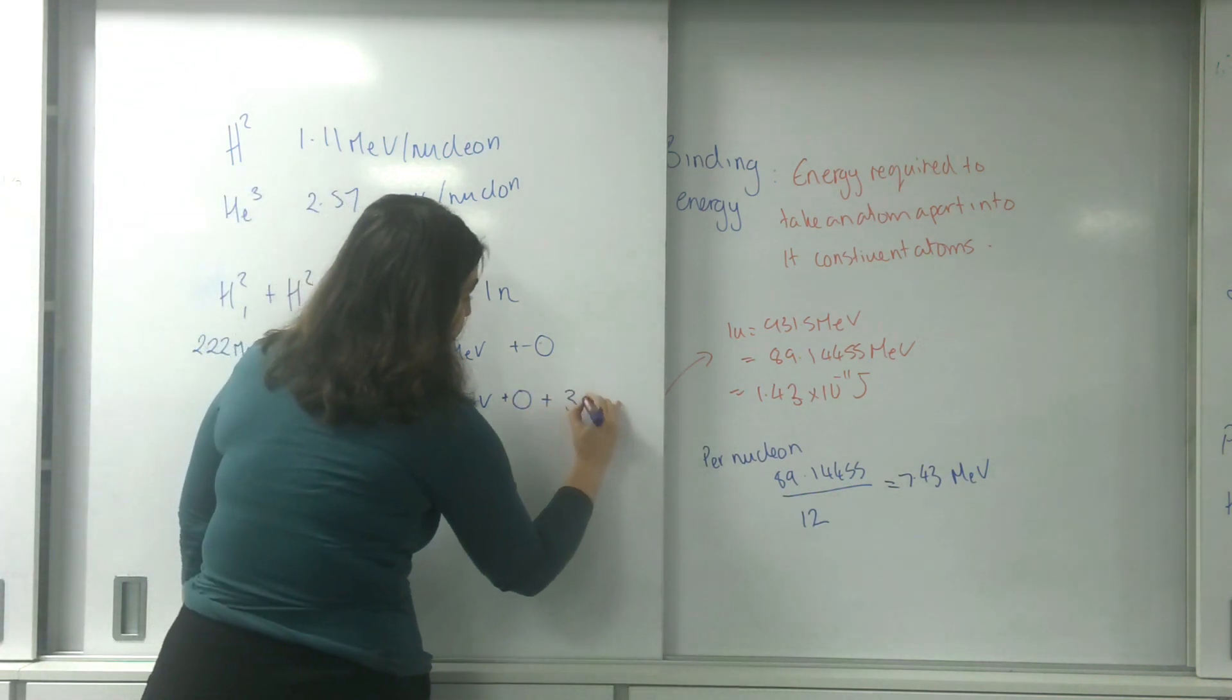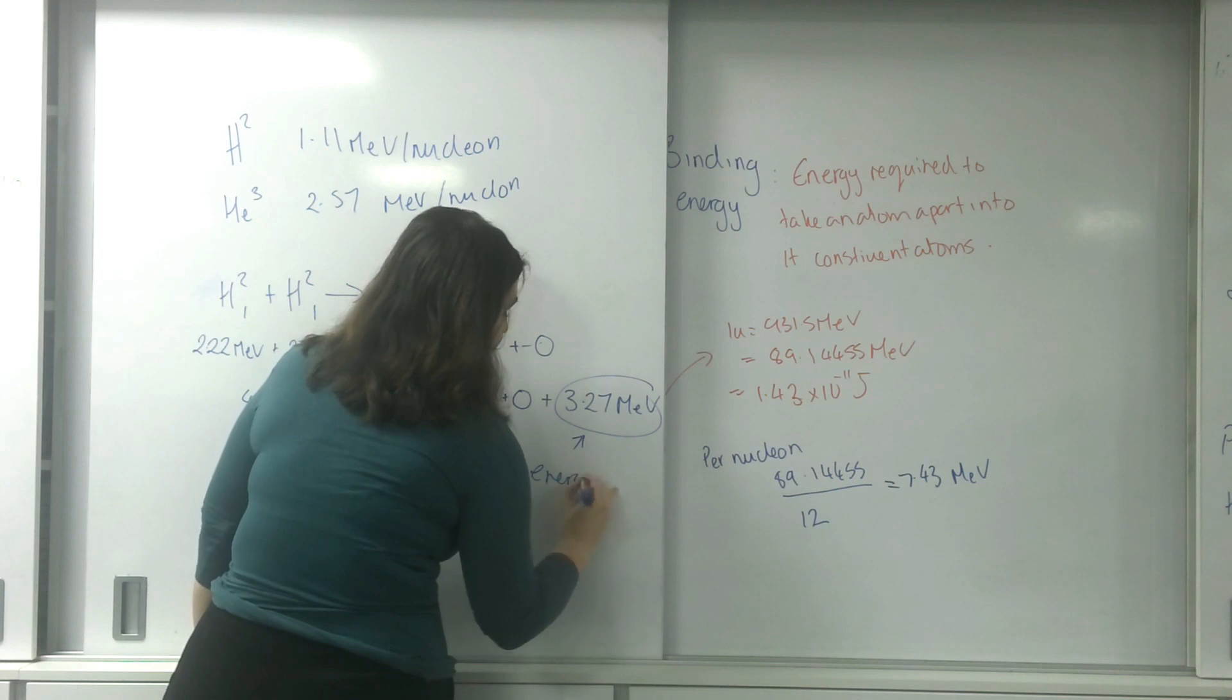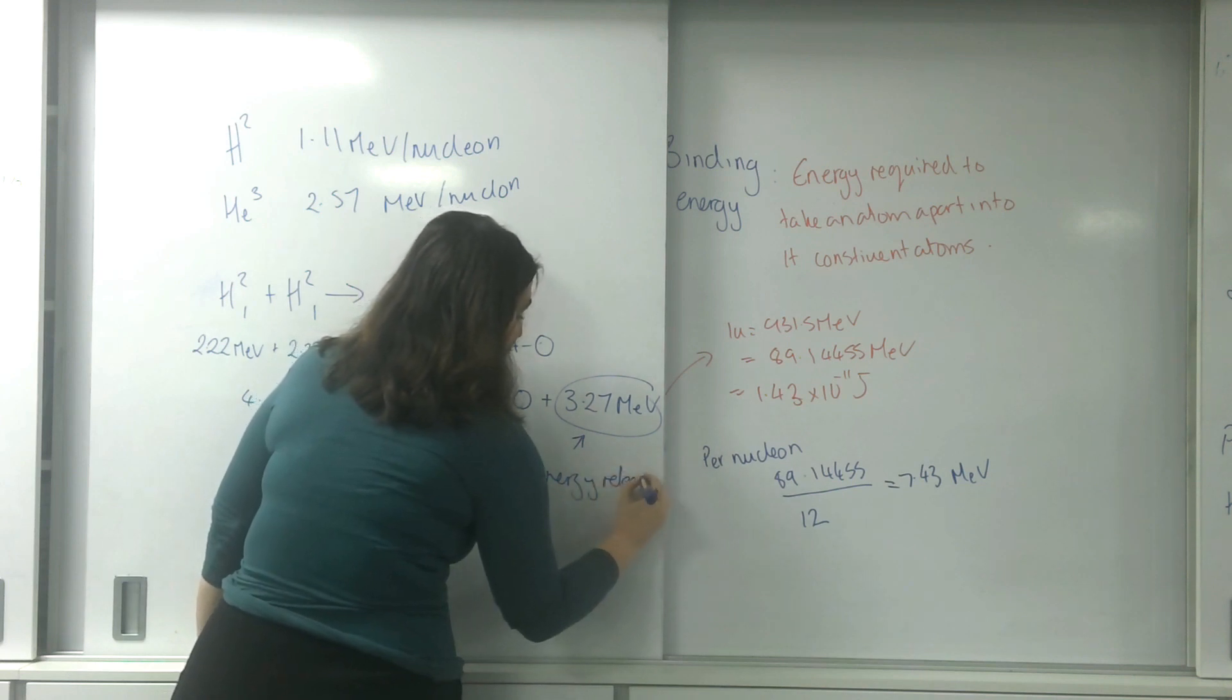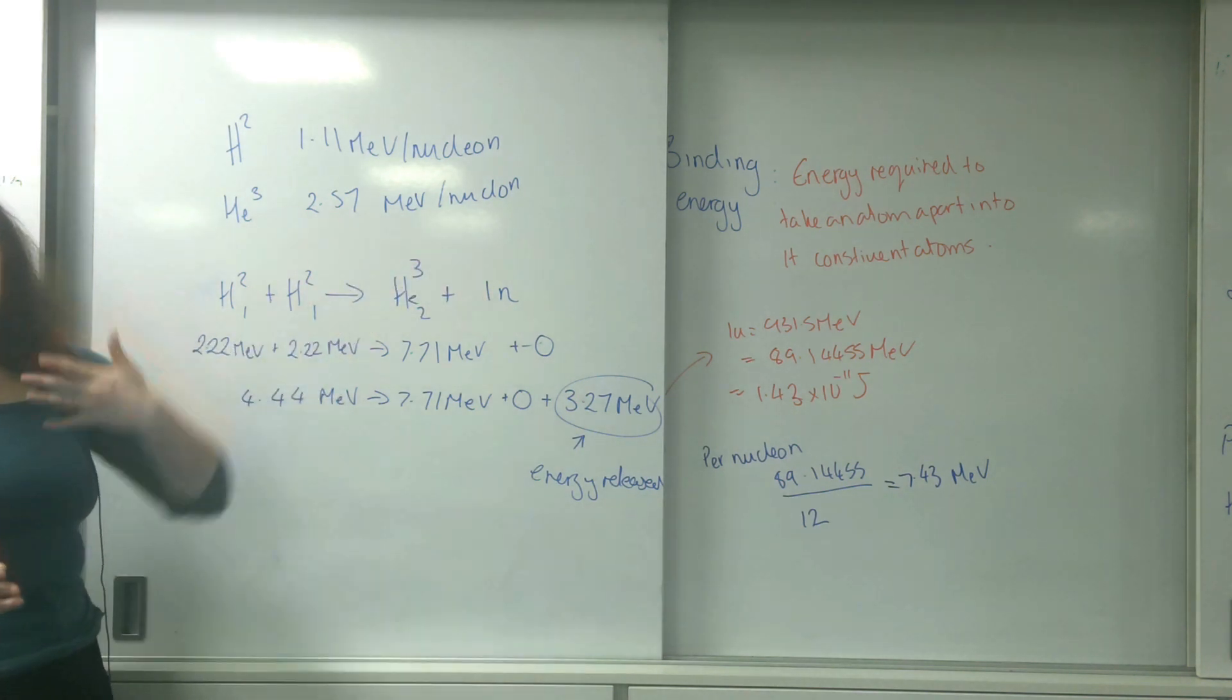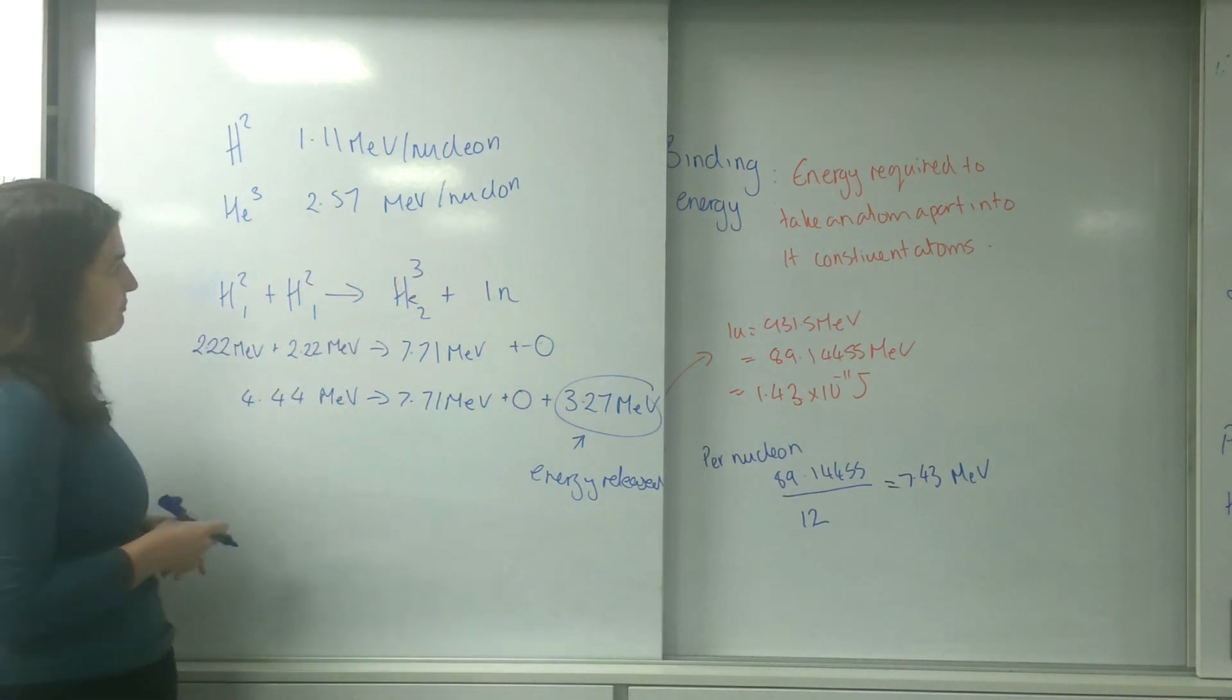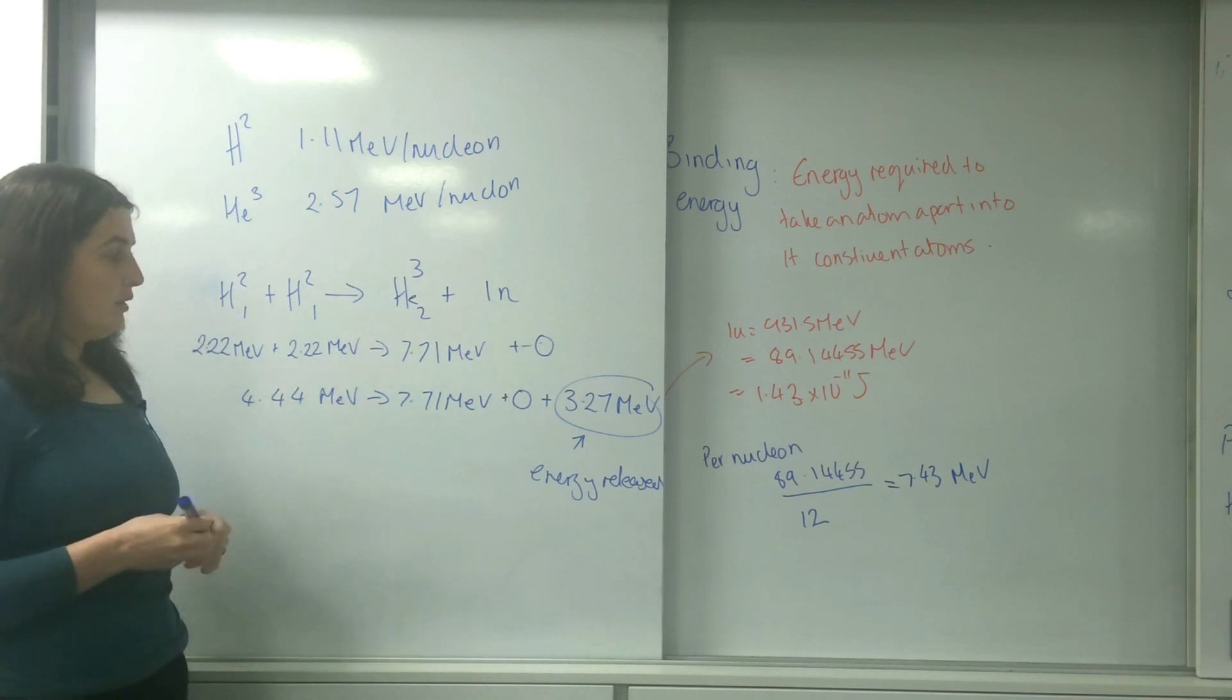That is the energy that's going to be released in this reaction. So plus 3.27 MeV, which is the energy released. It's important that you realize that this neutron doesn't have any binding energy, and that is telling me how much energy would have been released in total.